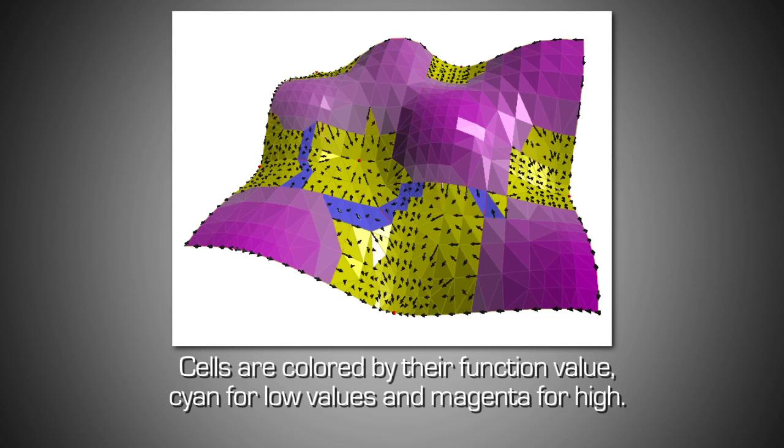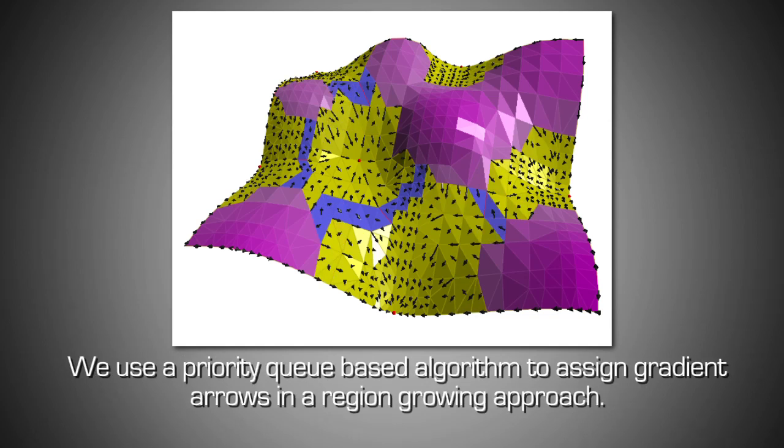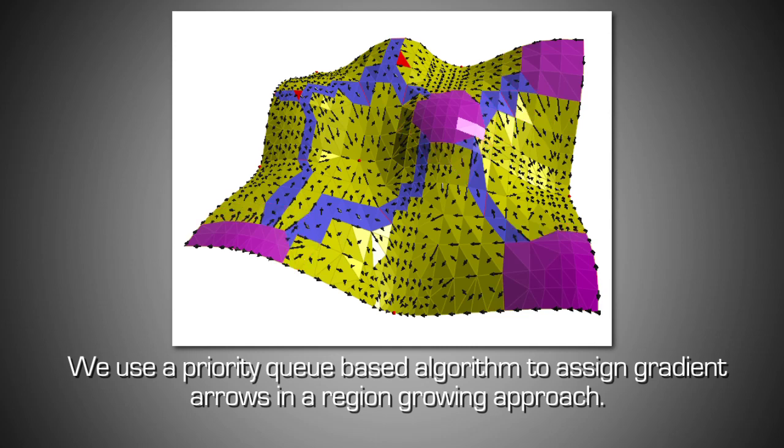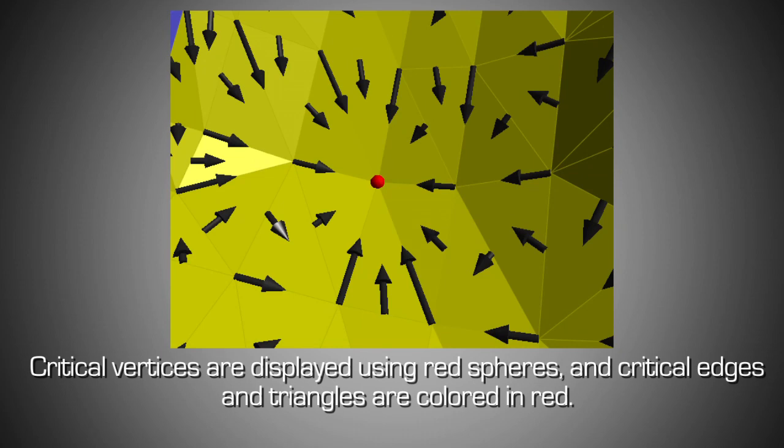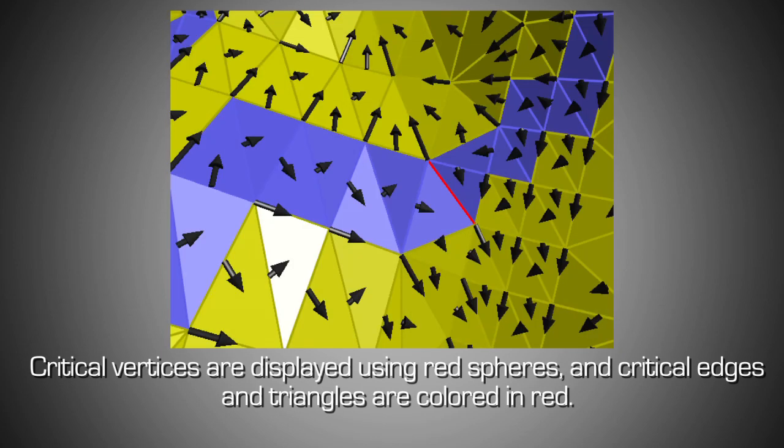We use a priority queue-based algorithm to assign gradient arrows in a region-growing approach. Critical vertices are displayed using red spheres, and critical edges and triangles are colored in red.